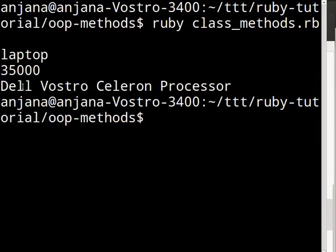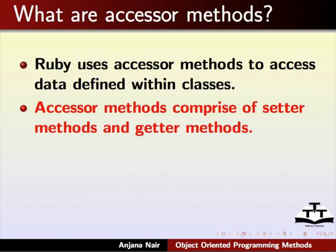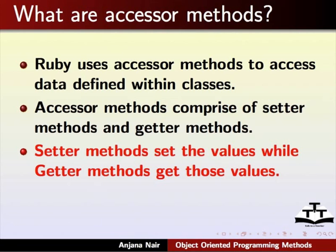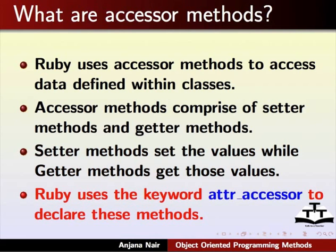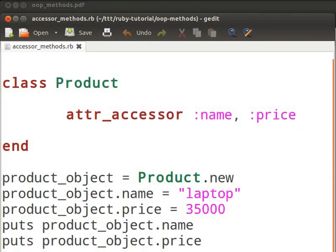Next, we shall see what accessor methods are. Ruby uses accessor methods to access data defined within classes. Accessor methods comprise setter methods and getter methods. Setter methods set the values while getter methods get those values. Ruby uses the keyword attr_accessor to declare these methods. Create a new file in gedit and name it accessor_methods.rb.